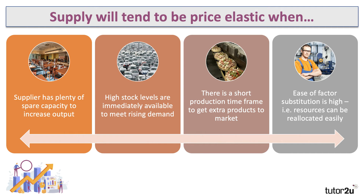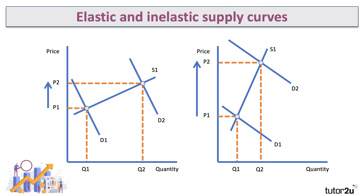A fourth factor — often not mentioned by students but a good one — is the ease of factor substitution. If demand shifts towards your products and you need to ramp up production, can you bring in labor and capital and other resources quickly? Can you switch them from one occupation to another? When workers are occupationally and geographically mobile, that can increase the elasticity of supply.